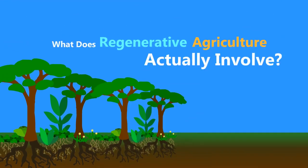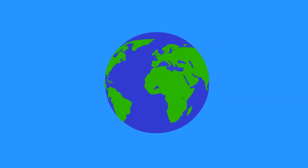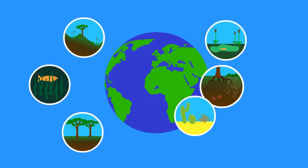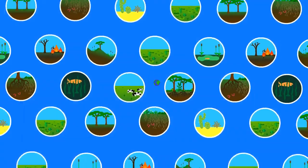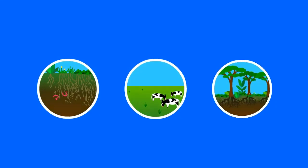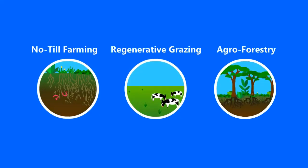So what does regenerative agriculture actually involve? Answering this question is actually pretty tricky because the practices that work best largely depend on the land that's being worked with. So the variety of different practices border on infinity, a bit more than this video can cover. However, let's look at three common forms that regenerative agriculture can take.